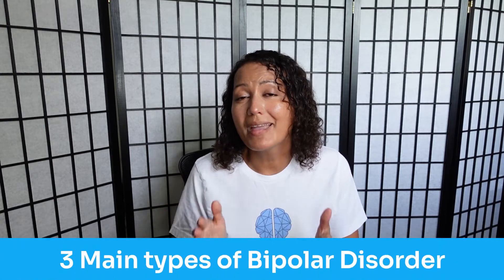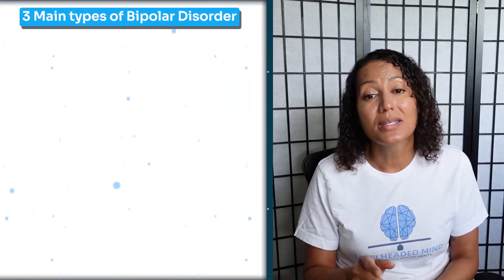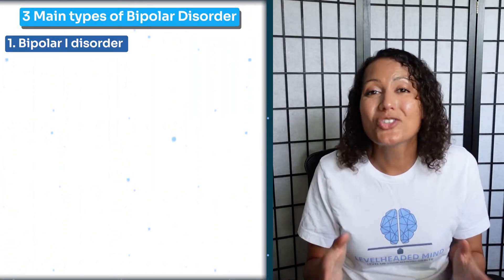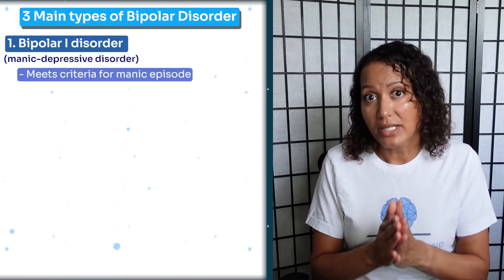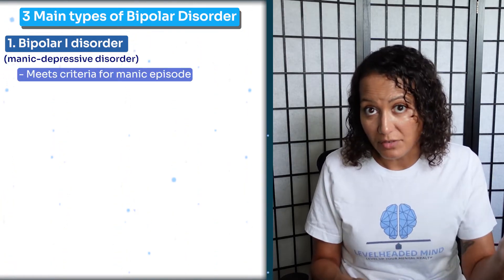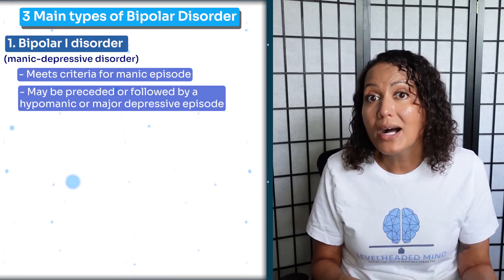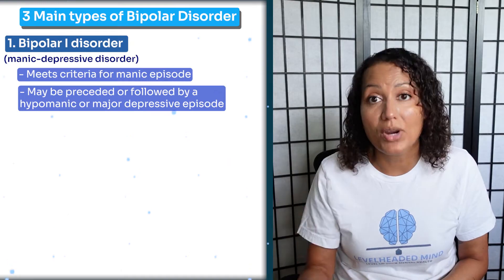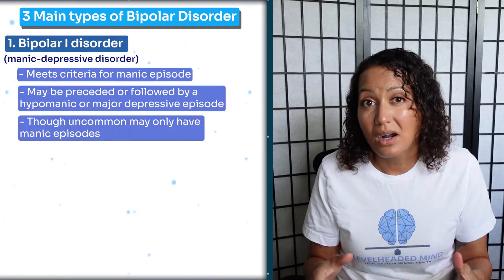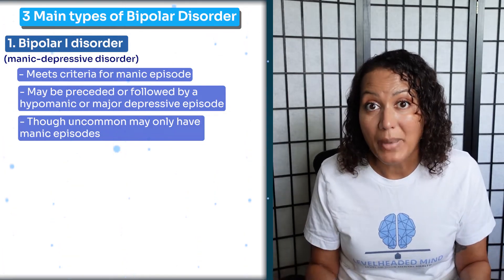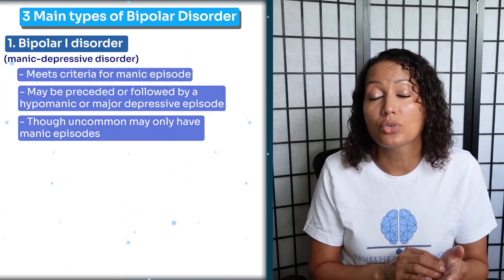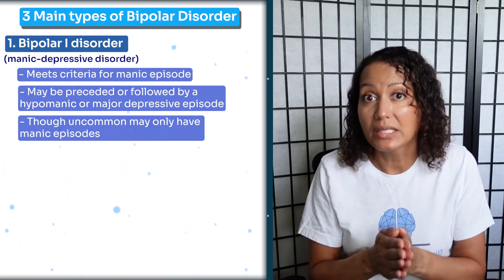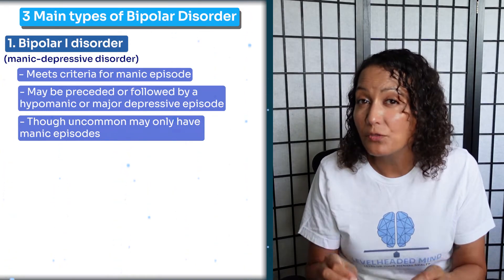Now let's talk about the three main types of bipolar. Starting with number one: Bipolar I Disorder, also known as manic depressive disorder. Bipolar I must meet the criteria for the manic episode and may be preceded or followed by either a hypomanic or a depressive episode. Though very uncommon, a person may only have manic episodes, fluctuating from mania to euthymia — that would still be considered Bipolar I.